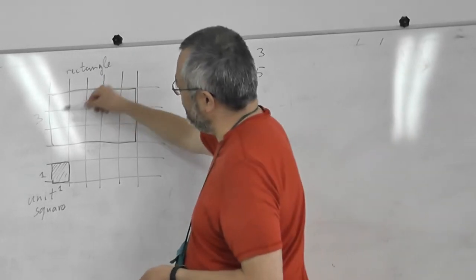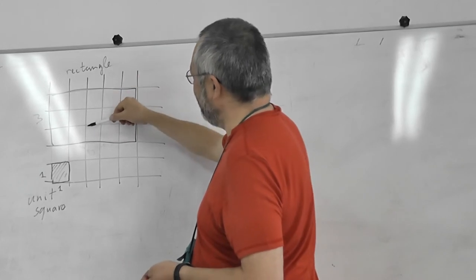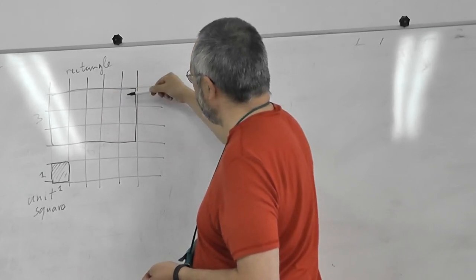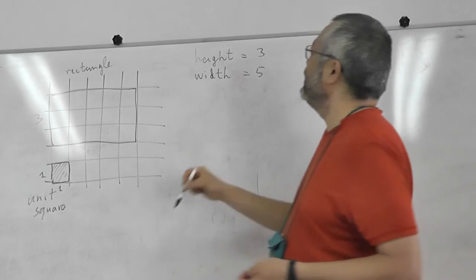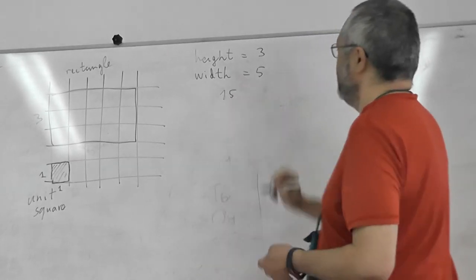And you can even count: 1, 2, 3, 4, 5, 6, 7, 8, 9, 10, 11, 12, 13, 14, 15. So we have 15 squares.